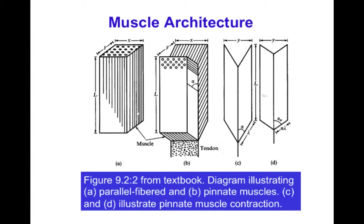The pennate arrangement favors generation of more force at the expense of less shortening capacity — more specifically, it can shorten slower. The parallel-fibered muscle can shorten faster but generates less force. The reason comes down to sarcomere arrangement: putting sarcomeres in parallel adds up their forces; putting them in series adds up shortening capacity and speed. A parallel arrangement of sarcomeres sums forces; a serial arrangement sums the amount and speed of shortening.